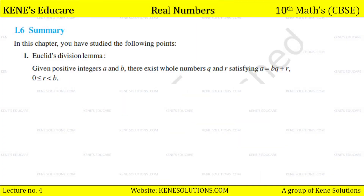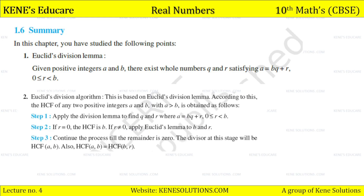In this chapter you have studied the following points. Euclid's division lemma: given positive integers a and b, there exist whole numbers q and r satisfying a = bq + r, where 0 ≤ r < b. That is, dividend = divisor × quotient + remainder. Euclid's division algorithm is based on Euclid's division lemma — the HCF of any two positive integers a and b with a greater than b is obtained as follows: apply the division lemma to find q and r where a = bq + r, 0 ≤ r < b.